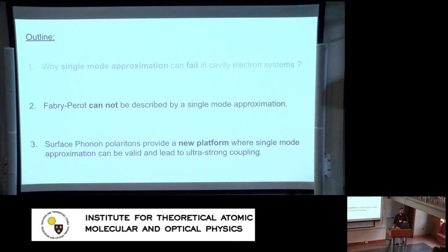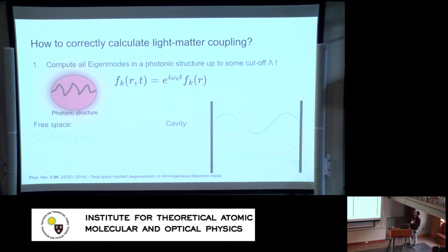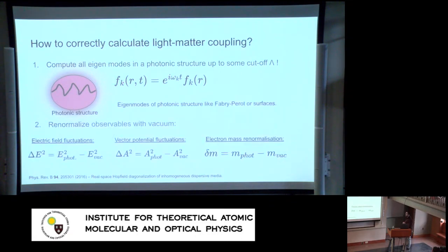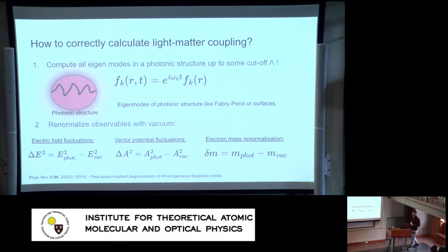To answer these questions, I use a multi-mode approach to see what really happens in a Fabry-Perot cavity and a surface phonon polariton system. The approach is: to correctly calculate what your photonic structure does, we compute all the photon modes up to some cutoff both for free space and the cavity. The observables we compute are then renormalized with respect to free space, similar to the previous talk. I'll focus on three observables: electric field fluctuations, vector potential fluctuations, and electron mass renormalization within the diagonal approximation.